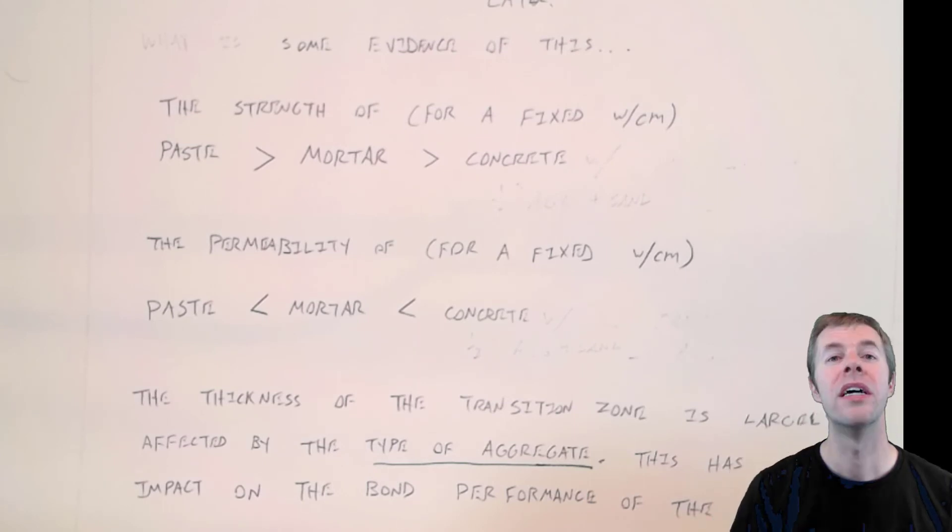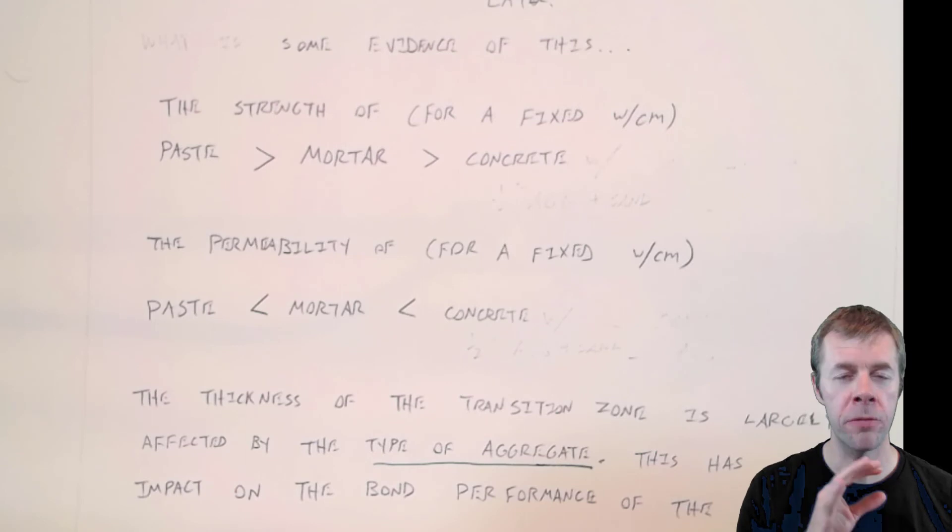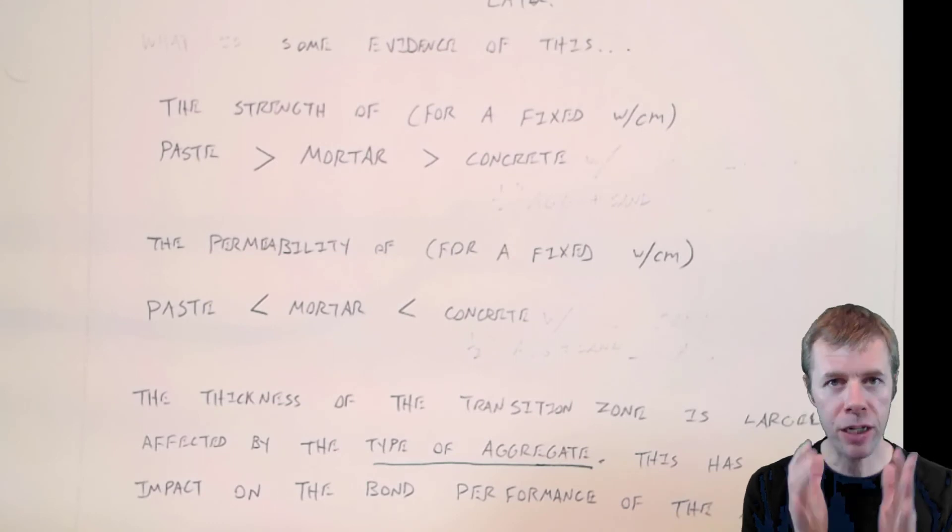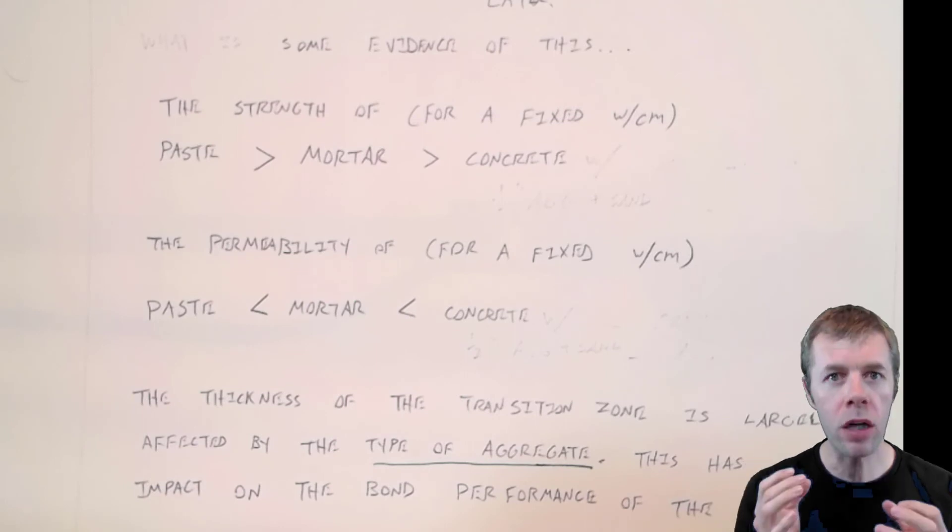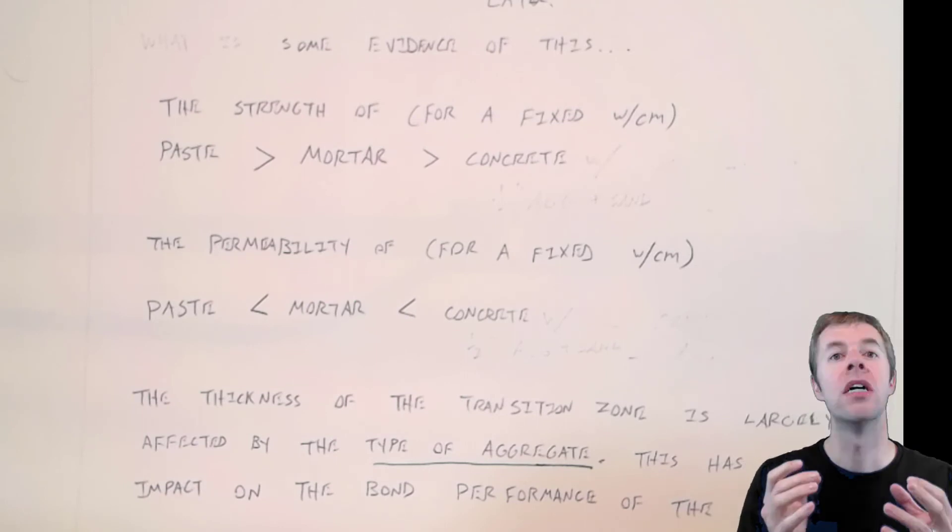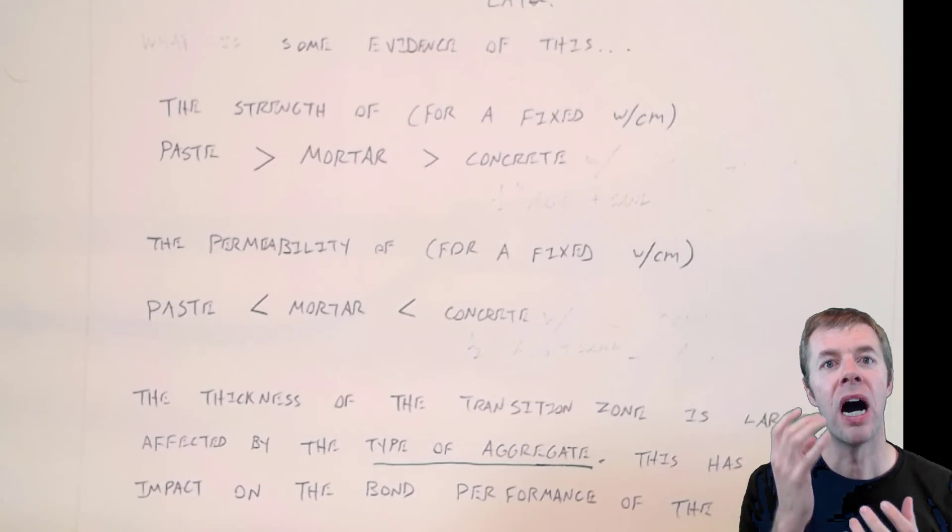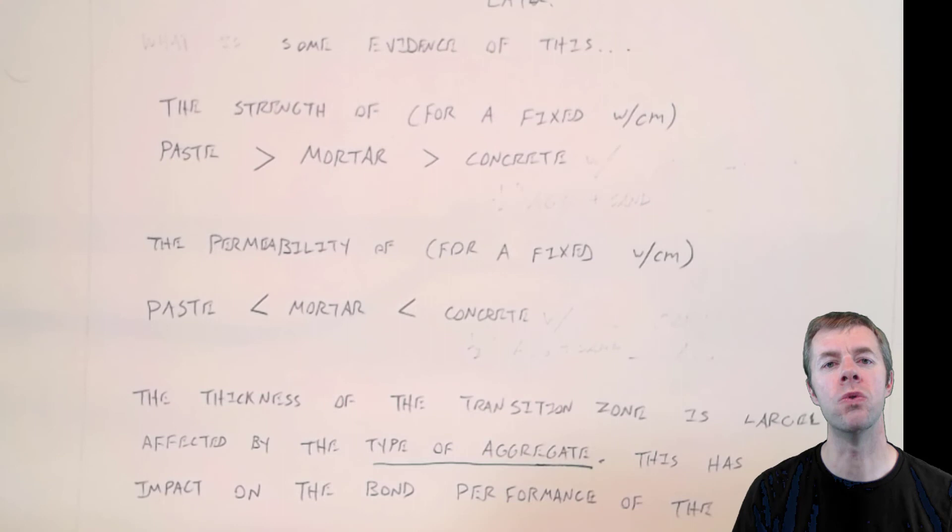Because if I get a crack, it's like a super highway into my concrete. And it doesn't matter how good my water cement ratio is. It doesn't matter how good my actual compaction was during my construction process. It doesn't matter how good my curing was on the outside. It doesn't matter my transition zone. I've got a short circuit. I've got a fuse that lets whatever it wants from the outside into my inside of my concrete. So if there's anything you can do to produce long-term durable concrete, it's reduce cracking.